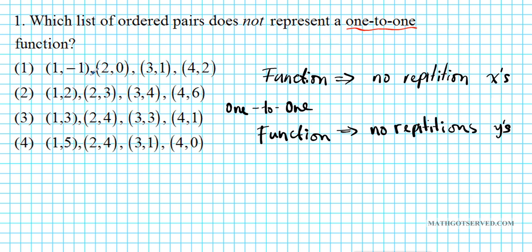So for option 1, negative 1 is unique, 0 is unique, 1 is unique, 2 is unique. This is 1 to 1. For number 2, 2 is unique, 3 is unique, 4 is unique, 6 is unique. This is also 1 to 1. Option 3, 3 repeats. So you have a repetition on this right here. So this is your answer.